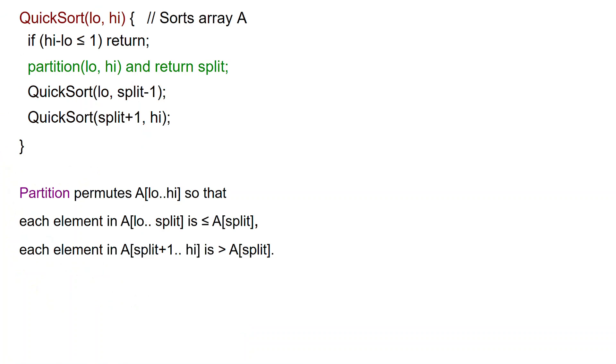Otherwise, we call a new function, which we are going to describe in a second, called partition. Partition takes its input again two indices and is going to return now a new index called split. Then we are going to call recursively quicksort to the subarray low to split minus one and then to the subarray split plus one to high. From these two recursive calls, you can note that the element at position split is put in the right place in the array because we don't touch it anymore.